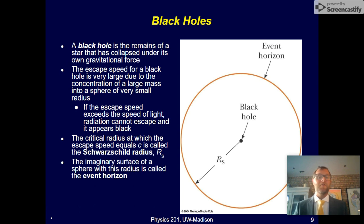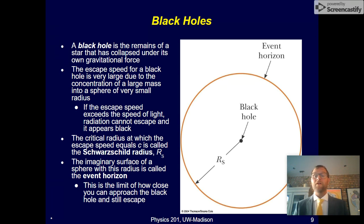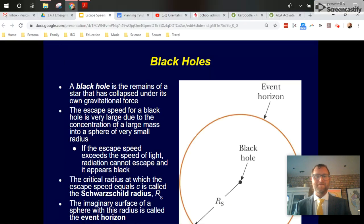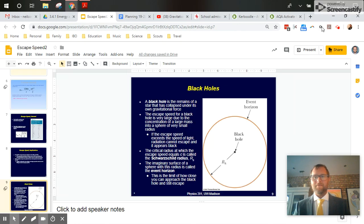This is also known as the event horizon—a point of no return. That's the limit of how close you can get to a black hole and still escape. In theory, there are also reasons why you'd be ripped apart before then, but we're not going to talk about that right now. That concludes the conversation about planetary fields.